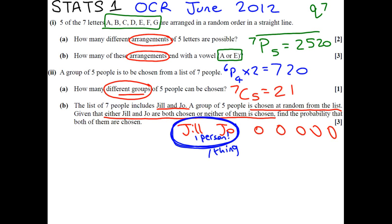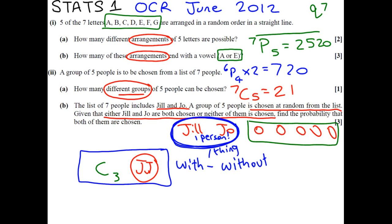So, if we want Jill and Joe to be in our group, let's call them JJ. There's 5 places in total, so there's 3 places left to fill. So, we want to choose 3 more people. And how many people do we have to choose from? 5 people left. So, 5 choose 3.